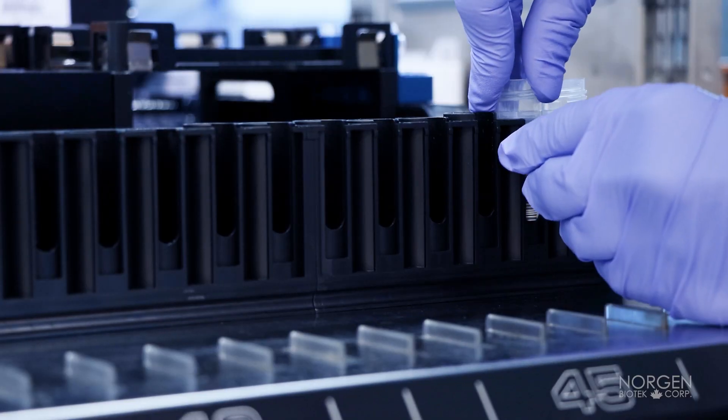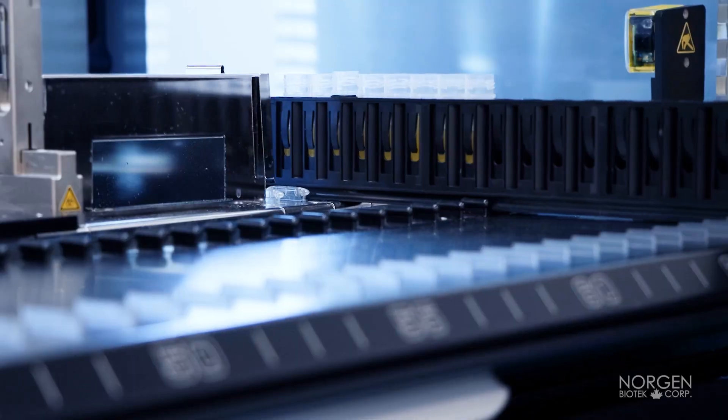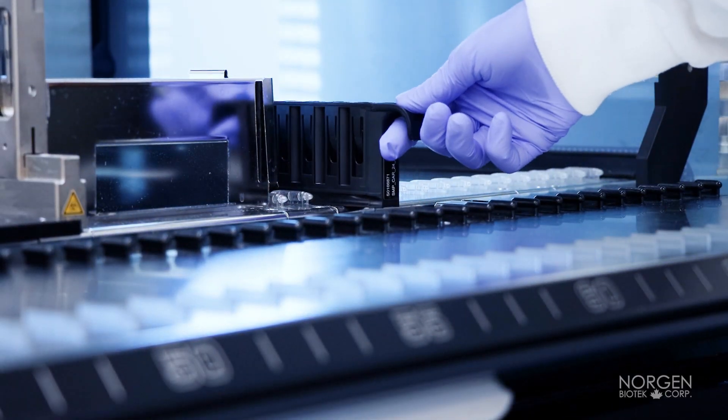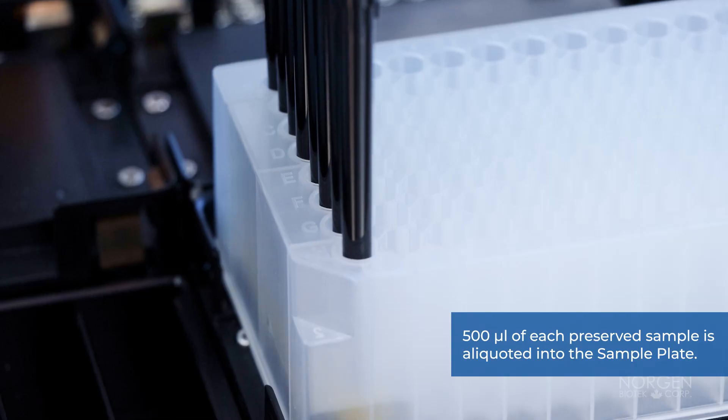Load the samples onto the Hamilton Vantage in the location indicated on the deck setup for samples. 500 microliters of each preserved sample is aliquoted into the sample plate.